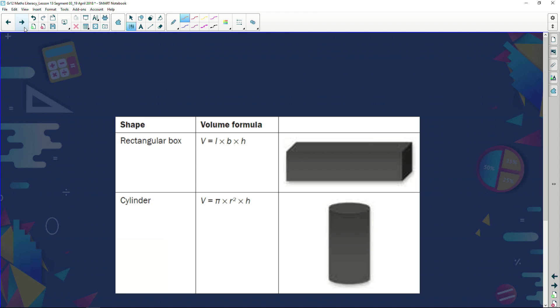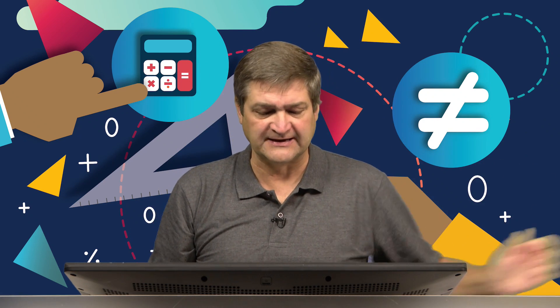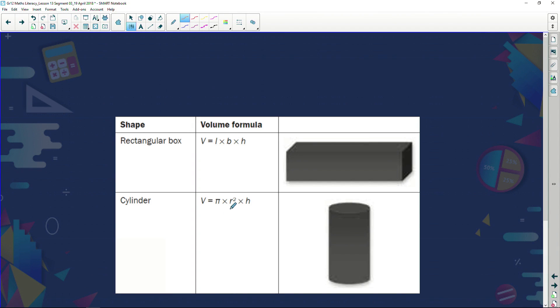Let's have a look at how we calculate volume. We can look at either a rectangular box or we look at a cylinder. And your syllabus requires you to know both of these. A rectangular box, the volume is quite simple: length times breadth times height. You've been doing that since primary school. What's the volume of a cylinder? A cylinder would be a round container, something like my water bottle. This is a cylinder. The volume of a cylinder we calculate by saying pi times radius squared times the height of that cylinder.